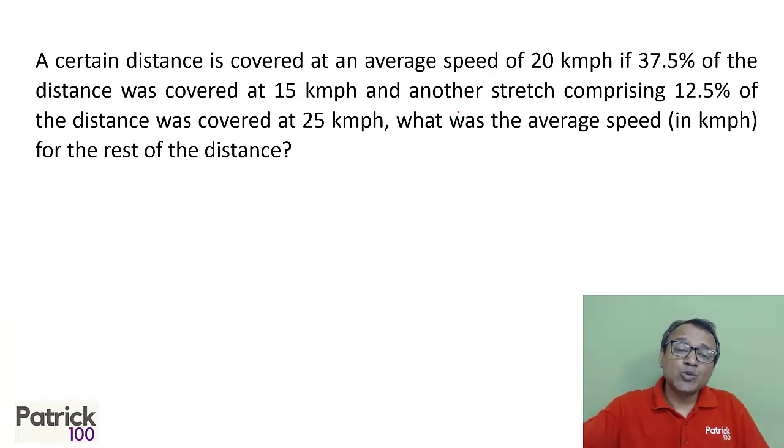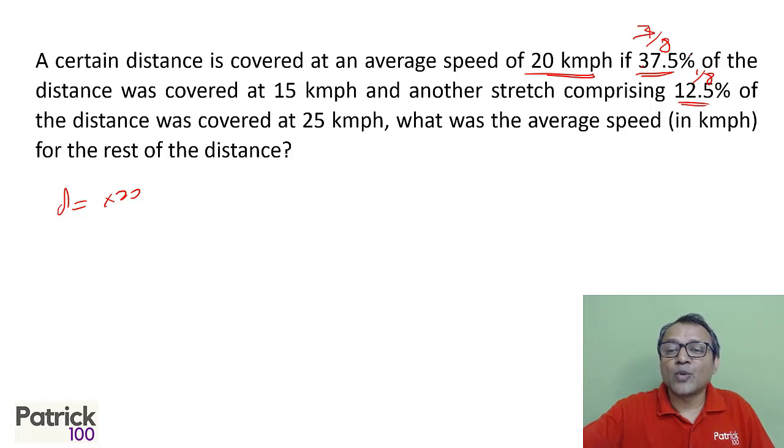Again, you can assume here. How to assume also becomes very important. You have to assume a number which is easy to calculate. So distance is 20 kilometers per hour speed. I have to assume distance which is a multiple of 20. It becomes easier because I get a number of hours as integers. Although 37.5 is 3/8, and 12.5 is 1/8. So 1/8 and 3/8. So again, it should be a multiple of 8. When I do 37.5 percent, I get a proper integer 12.5. So I will take a distance as 80. Multiple of 20 should be multiple of 8. I am taking a distance of 80.